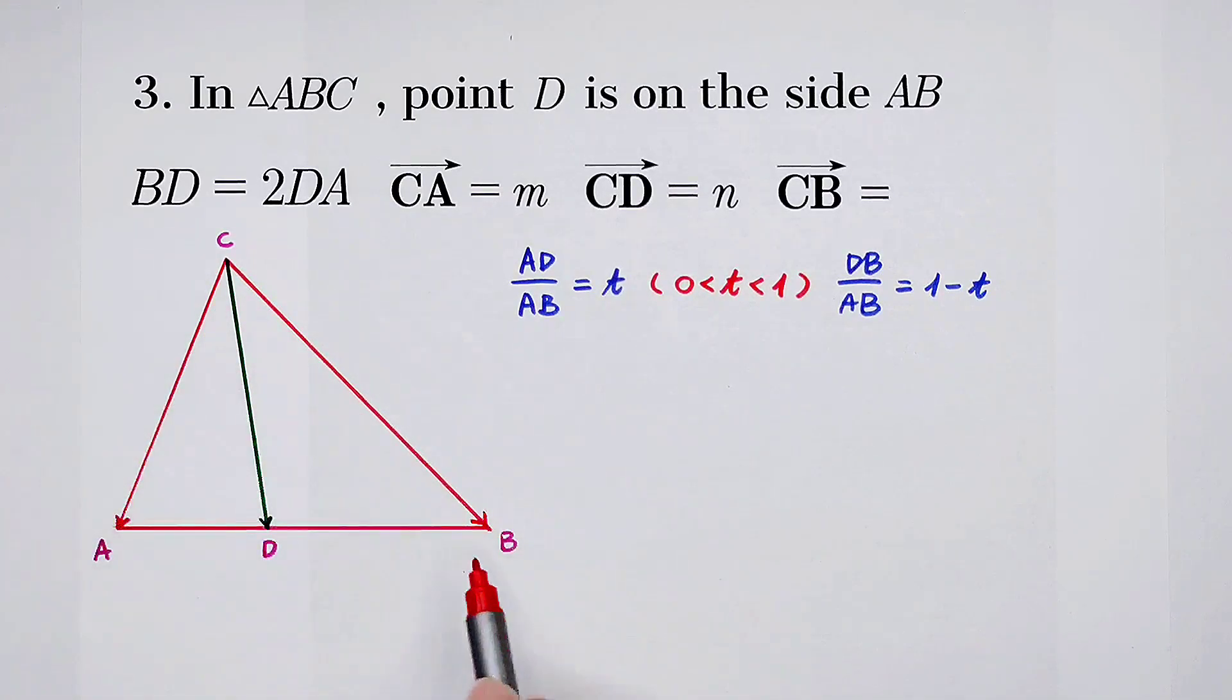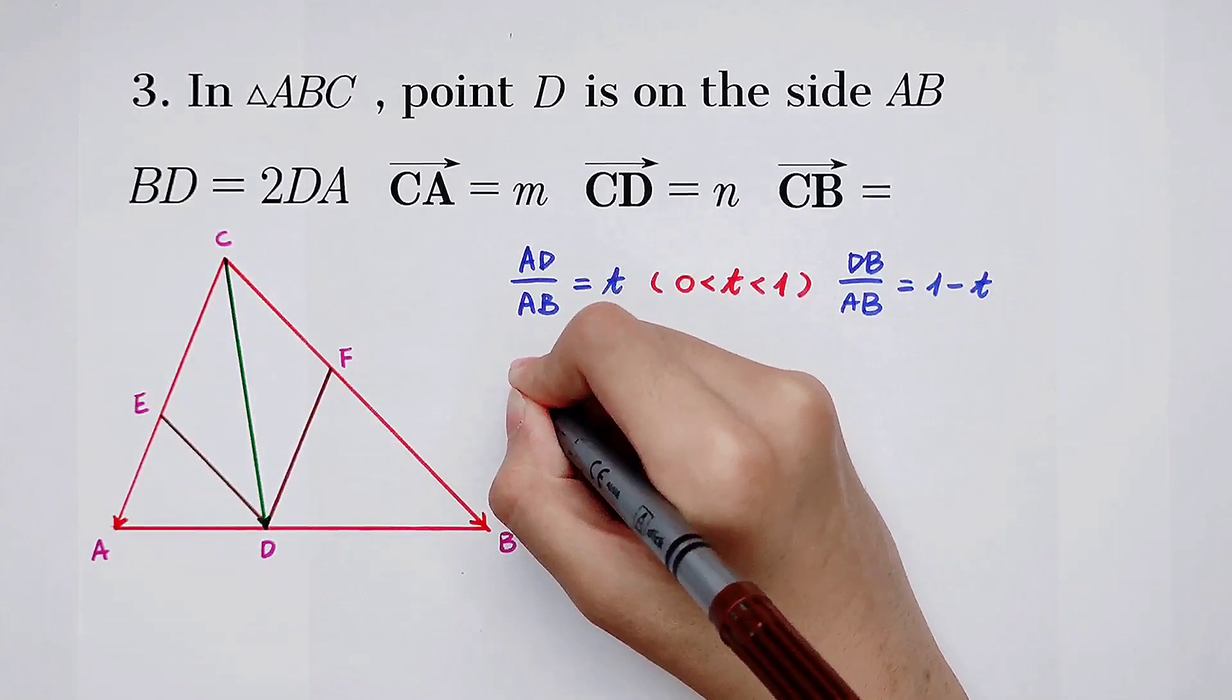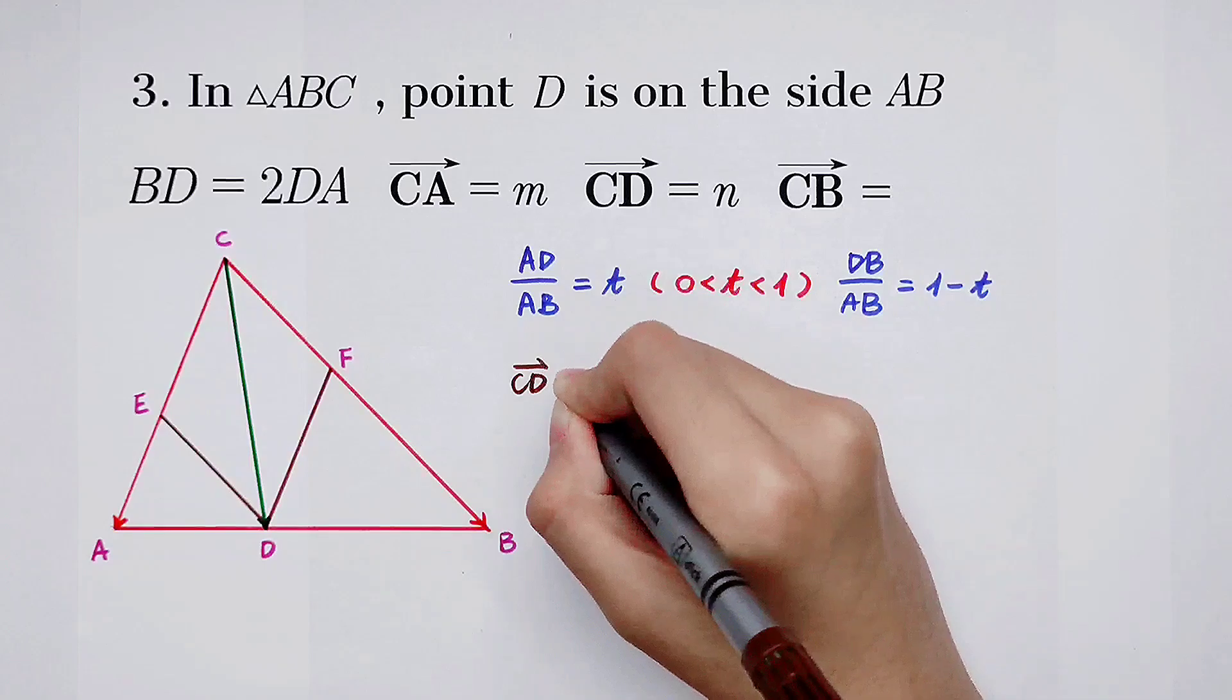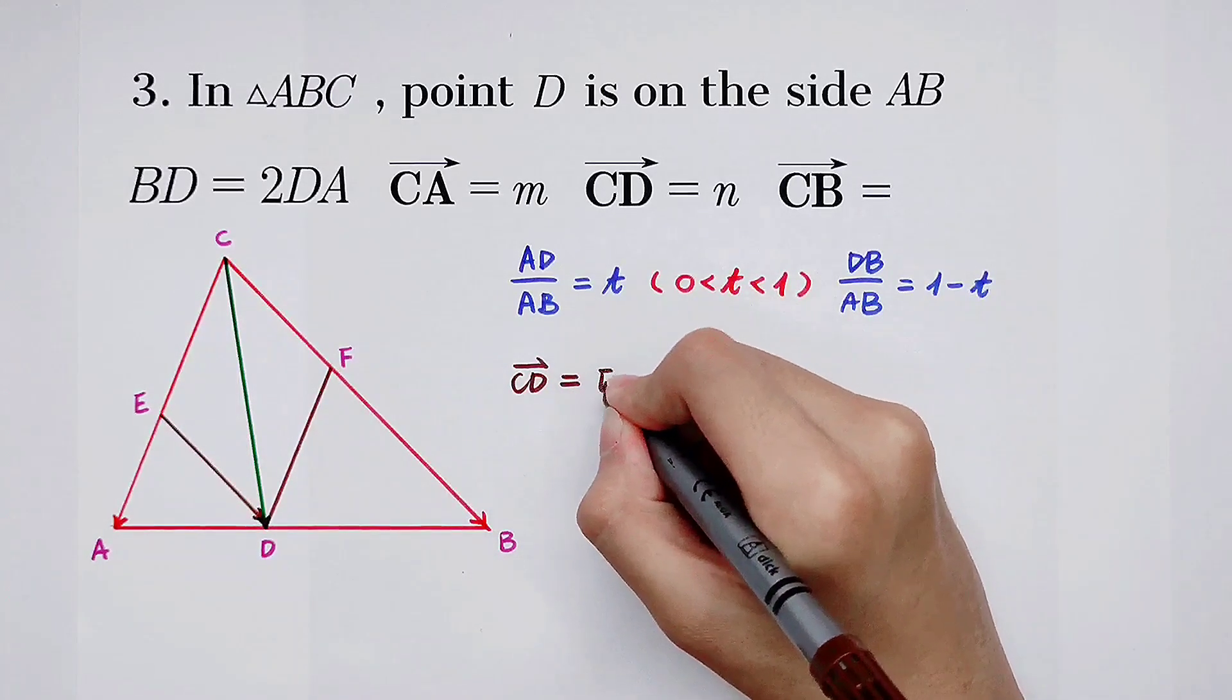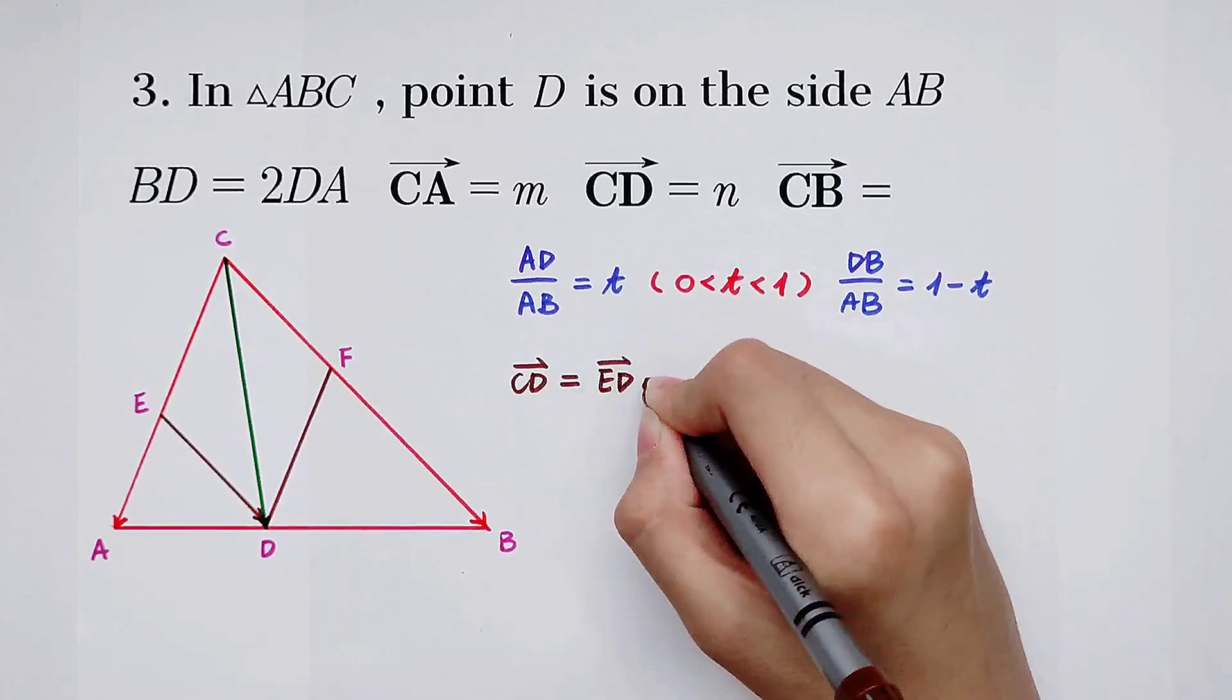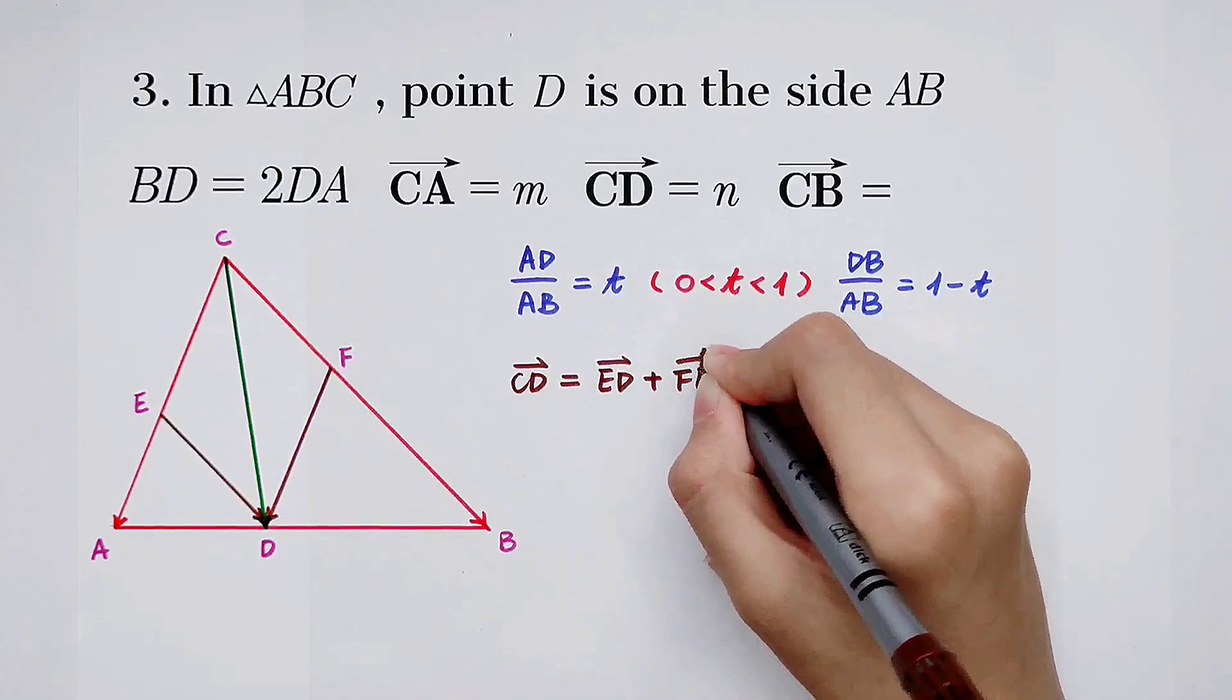Now we draw a line parallel to CB through the point D and intersect CA with point E. And also, draw a line parallel to CA through the point D and intersect CB with the point F. Now, vector CD, it can be written as the vector ED plus the vector FD.